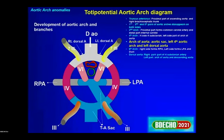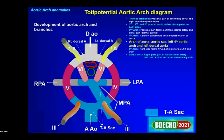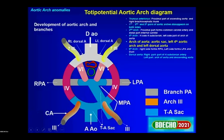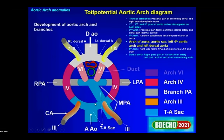There is an anterior aorta anteriorly and a dorsal aorta posteriorly, with six arches in between. On both sides, the first, second, and fifth pairs of aortic arches disappear; only the third, fourth, and sixth persist. From the third arch, the common carotid artery arises; from the fourth arch and left dorsal aorta, the arch of the aorta arises. The sixth arch gives rise to the pulmonary arteries and the ductus. The seventh intersegmental artery gives rise to the subclavian artery.